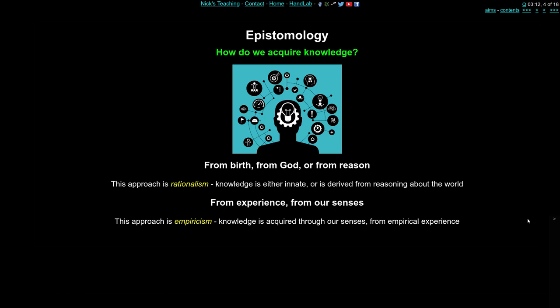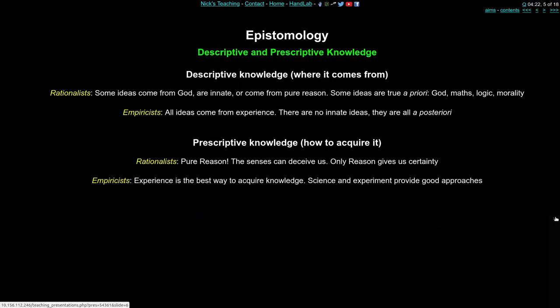These are words to do with reason — using your reason to come up with knowledge. The second alternative is to get knowledge from our experience, just from our senses, our sensory experience of the world as we move around. This is empiricism. The two forms of epistemology differ according to where knowledge comes from, but also how we acquire it, and how to go about acquiring it. This has been distinguished as descriptive versus prescriptive knowledge.